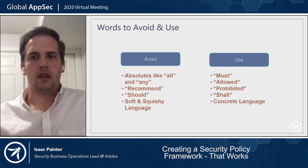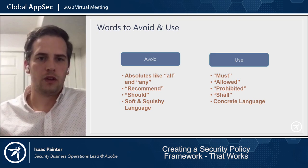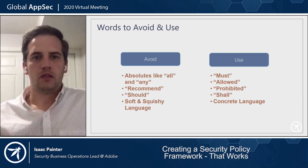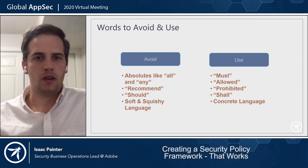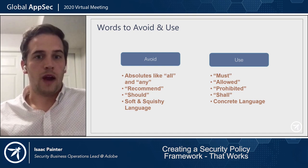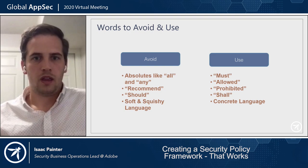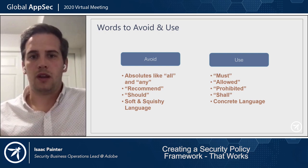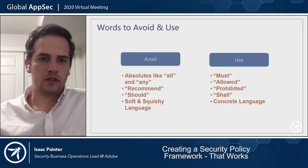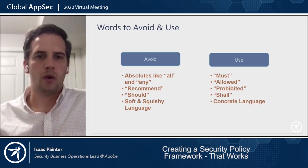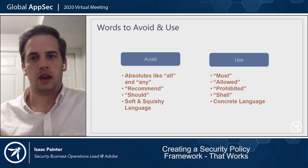A few highlights on language: avoid absolutes like 'all' and 'any.' From a legal perspective, using those words implies perfection — 100%. If you say all accounts must be reviewed quarterly and there's any imperfection, it can be held against you. Also avoid soft words like 'recommend' or 'should' in governing documents — those belong in non-governing documents. In governing documents, use concrete language like 'must,' 'allowed,' 'prohibited,' and 'shall.'